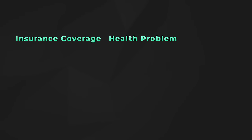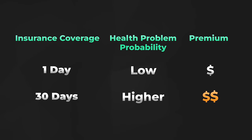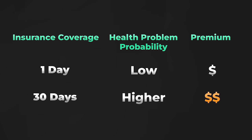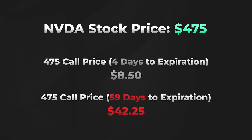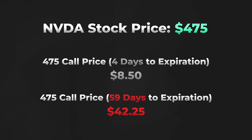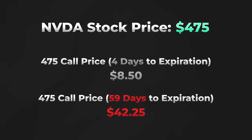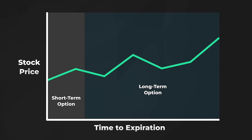To understand this, imagine buying health insurance for a 1-day period versus a 30-day period. There's a higher probability of experiencing a health problem over 30 days compared to 1 day, so you pay a higher premium for the 30-day insurance. The same concept holds true for options. Looking at Nvidia options with only 4 days until expiration, you'll notice significantly cheaper option prices compared to options with more time remaining. The likelihood of significant stock price changes increases over longer periods, so longer-term options trade at higher prices compared to shorter-term options.